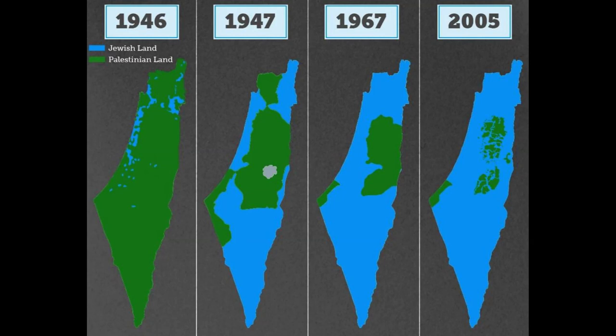During World War II, the Holocaust resulted in the deaths of 6 million Jews. In the aftermath of the war, there was a surge of support for Zionism and the creation of a Jewish state.